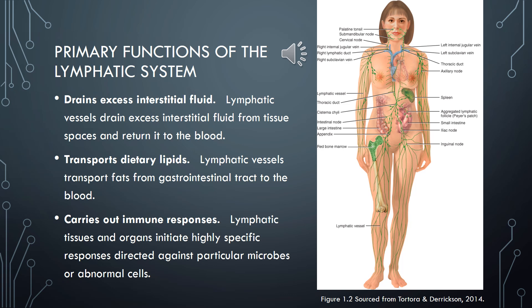The intestinal lymphatic vessels work with the villi of the intestines to help absorb and deliver fats to the bloodstream, while the tissues and organs of the lymphatic system help protect the body from infection and disease.